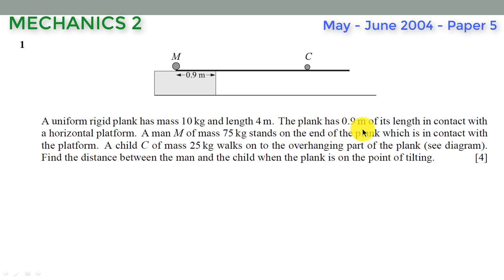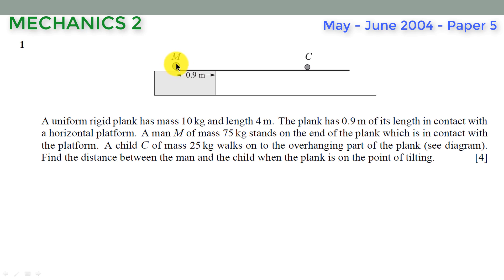The plank has 0.9 meters of its length in contact with the horizontal platform. A man M of mass 75 kilograms stands on the end of the plank which is in contact with the platform — that is, at the edge of the plank at that point. A child C of mass 25 kilograms walks onto the overhanging part of the plank.